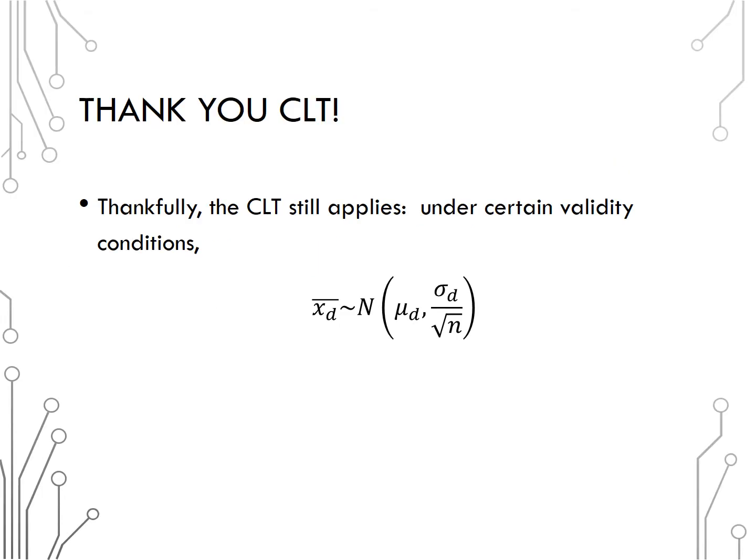We are again in a situation where we can use the central limit theorem to apply a theory-based approach. Under certain validity conditions, the sampling distribution of several sample mean differences will be approximately normal, indicating that it will be bell-shaped and symmetric, centered at the true mean of the differences, and with standard deviation sigma sub d, the population standard deviation of differences, divided by the square root of the sample size.